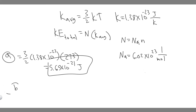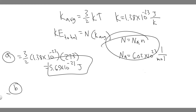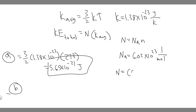Now let's do part B — solving for the total translational kinetic energy of 1 mole of O2 molecules at 25 degrees Celsius. The formula is the number of molecules multiplied by K average. First, let's find the number of molecules: N equals the number of moles times Avogadro's number. So that's 6.02 times 10 to the 23 times 1 mole, which gives us 6.02 times 10 to the 23 molecules.